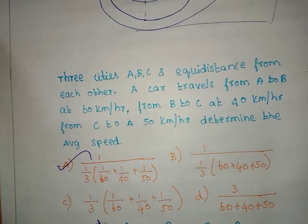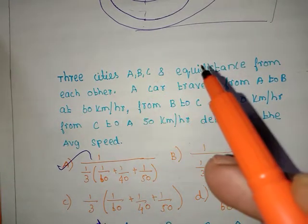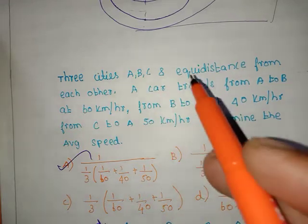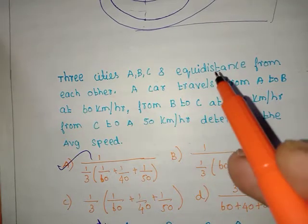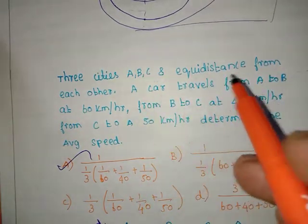There are three cities equidistant from each other. That is equal distance. Equidistance is the same. Same distance in between.